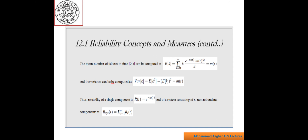The expected mean number of failures in time [0, t] can be computed with the following formula. We can find the mean number of failures and its variance — the variance can be computed with this formula. The reliability of a single component is R(t) = e to the power of minus λt, and for a system consisting of n non-redundant components, we can find reliability with this formula.